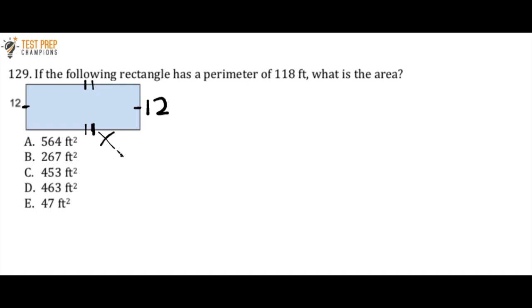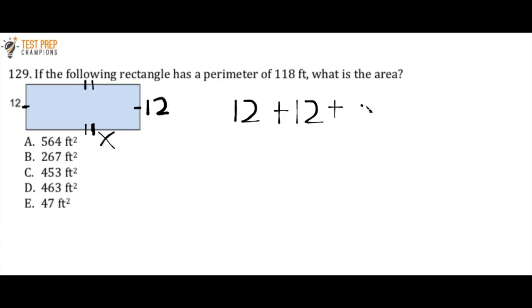To calculate the perimeter, we add up all of the sides. We know this side is 12, and we know this side is 12. We don't know what this side is, so I'll call it X. And we also don't know what this side right here is, so I'll call that X as well. And we know that this is all equal to 118.